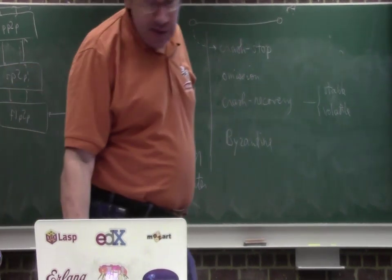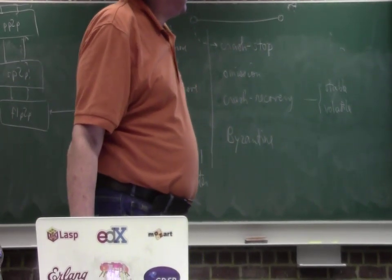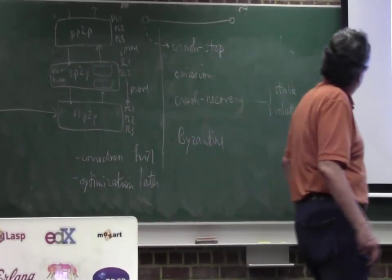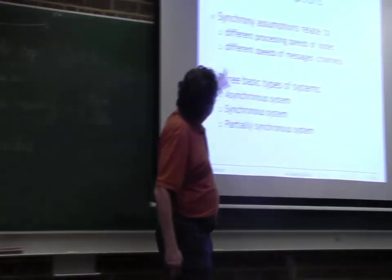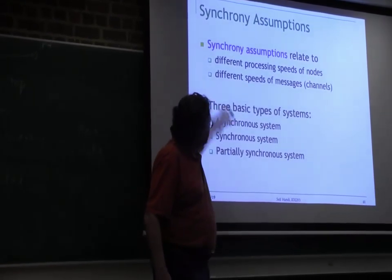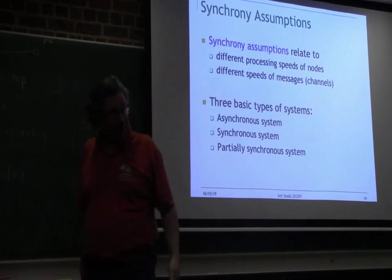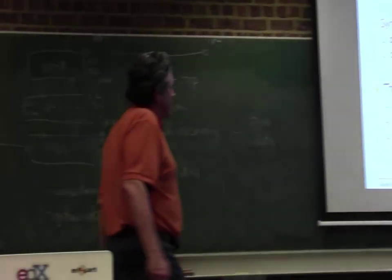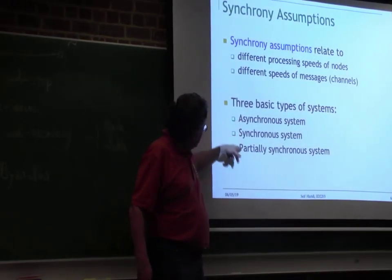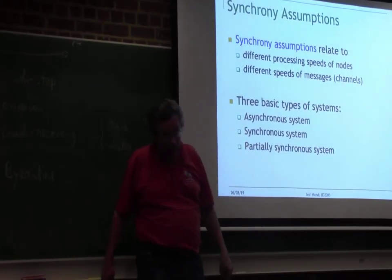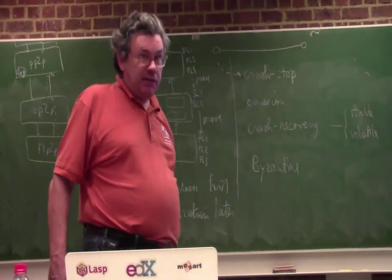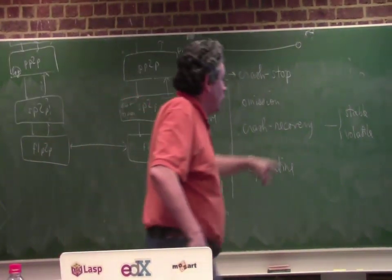We also have to talk about the synchrony — basically the timing, the synchronous or asynchronous systems. So the speeds, the nodes, how fast are they, the messages, how long do the messages take. There are three kinds of systems: asynchronous, synchronous, and partially synchronous. For different algorithms, it changes a lot which one you assume.